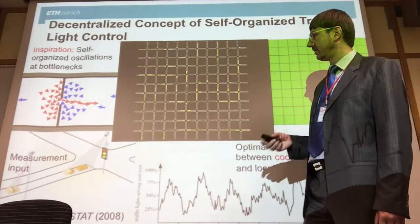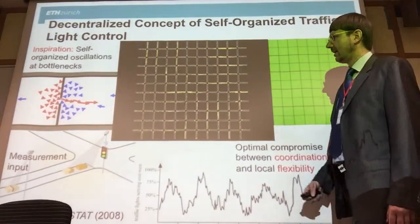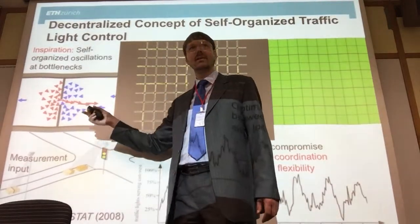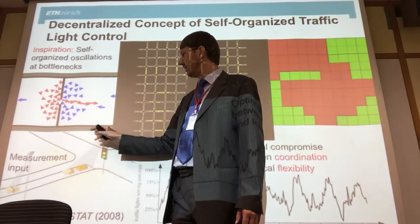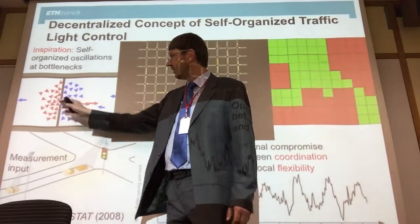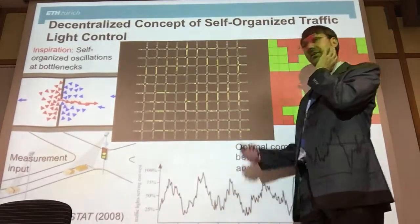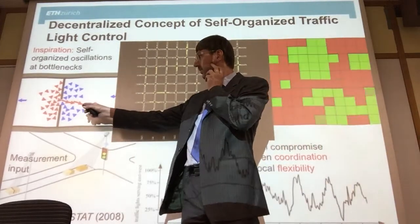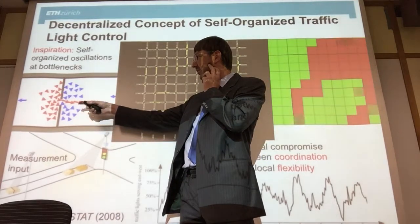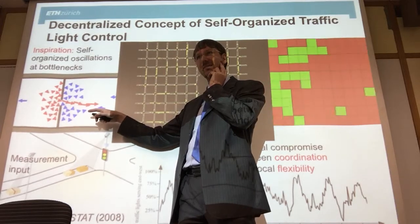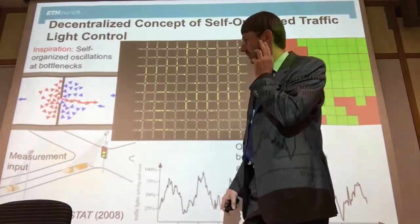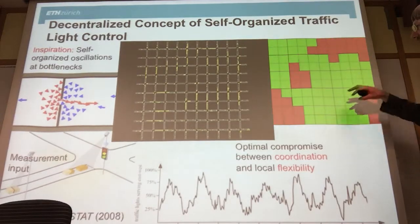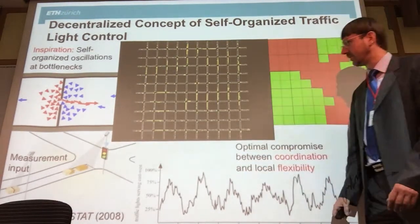We were inspired by pedestrian flows — I'll come back to this later. At bottlenecks, pedestrians pass in an oscillatory way that looks like there would be a pedestrian traffic light, but there is not. It's just based on pressure building up in the crowd. We were thinking: couldn't we use this to define a traffic light? So then the traffic flows define or control the traffic lights, rather than the other way around. It's a completely different philosophy. And in fact it's causing synchronized patterns in the city and causing green waves. We were just applying a self-organization approach to reach a coordinated result.